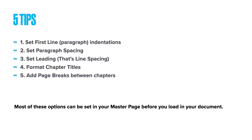Set the first line indentations. Set paragraph spacing — that's the space before or after a paragraph. Set leading, that's line spacing if you're a Word user. In Microsoft Word and other common word processors it's not actually called line spacing, it's called leading and there's a reason for that we'll go into later. Formatting chapter titles and adding page breaks between chapters — five simple tips, and if you miss any of these it could ruin your Kindle ebook.